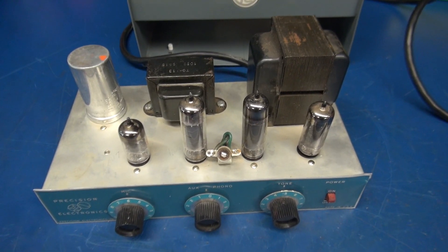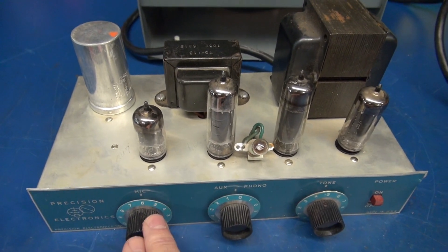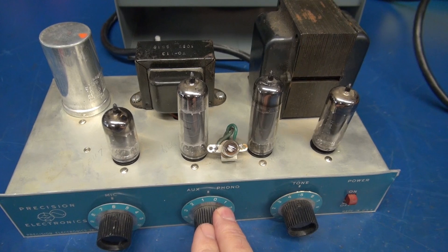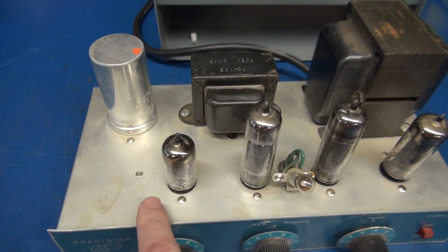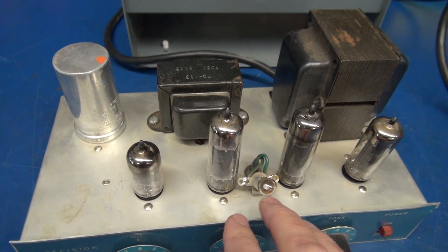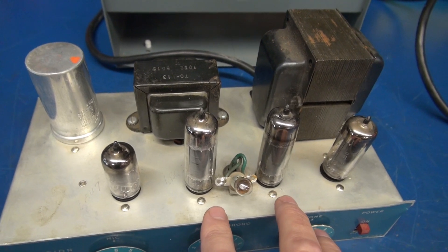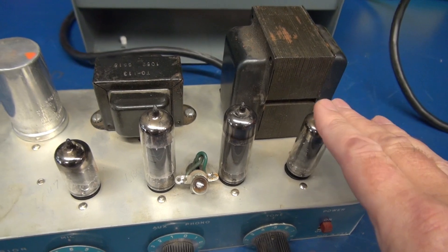Here we have the Precision Model S10 PA amplifier. You have a microphone input, an auxiliary input, and a tone control. Tube lineup is the 6EU7, and that is your preamp and inverter to drive the pair of EL84s. Rectifier tube is the 6V4.